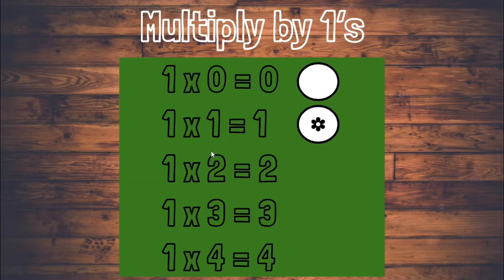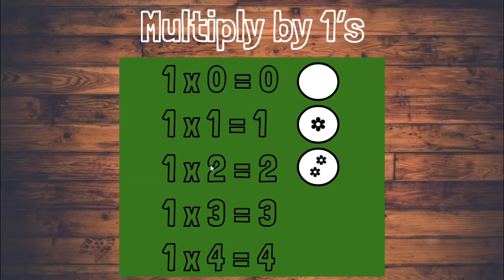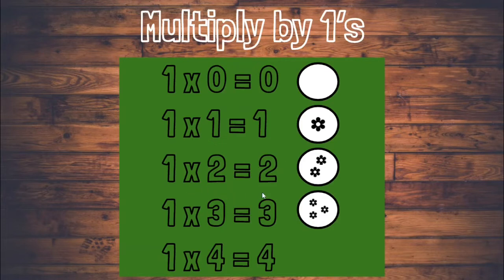One times two equals two. We need one group with two inside of the group, so we know the product is two. One times three means one group with three flowers inside of the group, which gives us the product three.